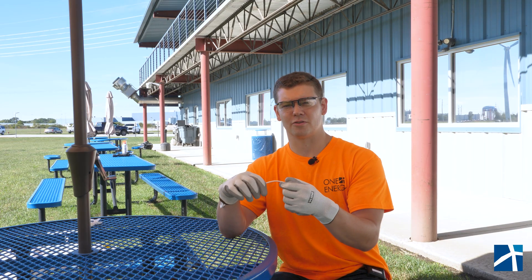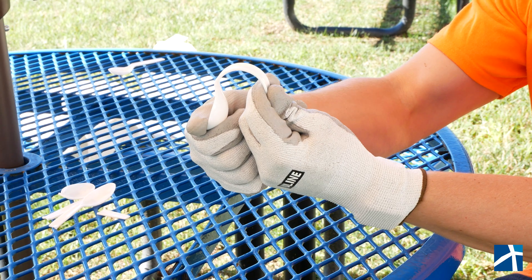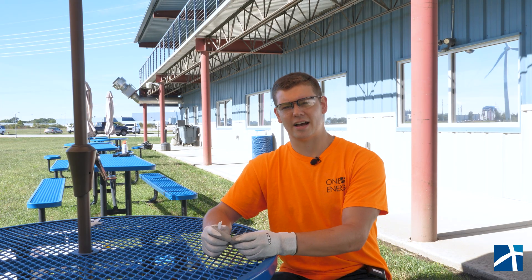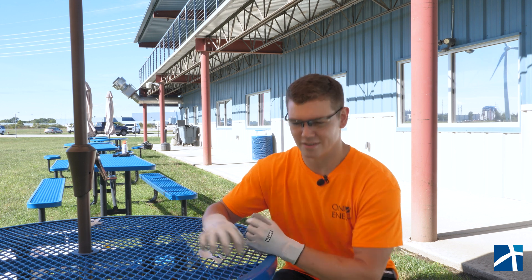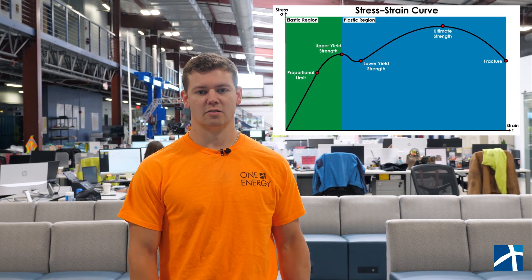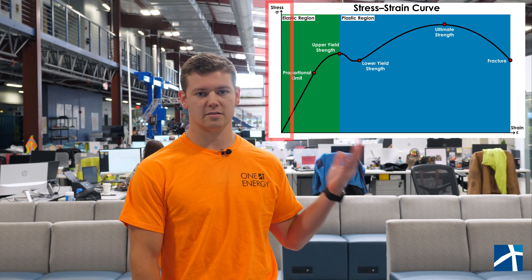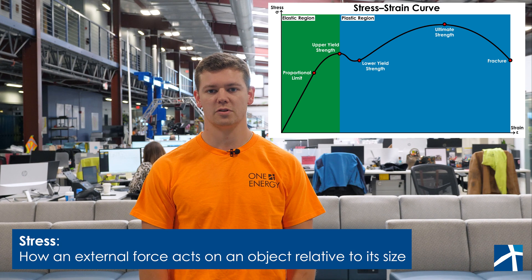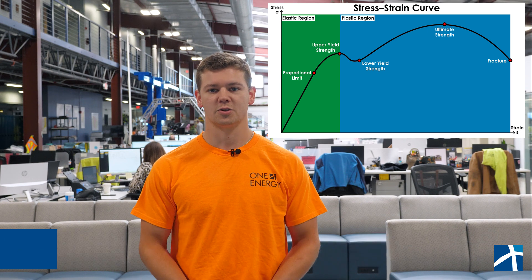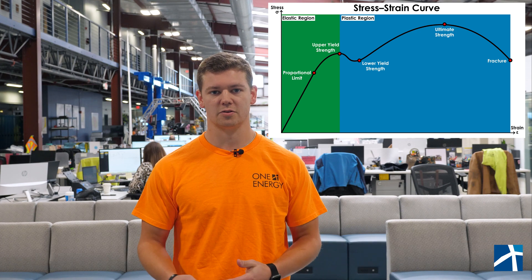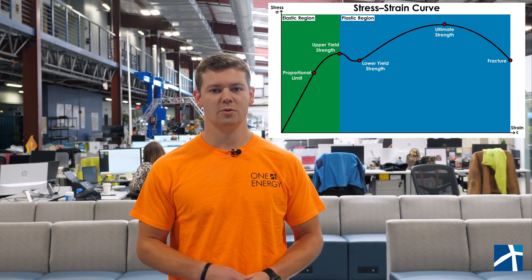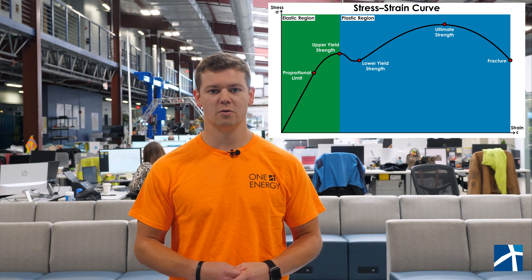If you continue to bend something further and further in its plastic region, eventually it will fail. Now that we have a decent understanding of elastic and plastic deformation, we can slide into the graphs that will show how materials can deform: stress-strain curves. Since all materials can undergo both elastic and plastic deformation, it's important to understand and visualize their properties. That's where the stress-strain graph comes in. This graph compares stress on the y-axis to strain on the x-axis. Stress is the measure of how much force a material is experiencing relative to its size or area. Strain is how the shape of an object is altered, like being stretched, squished, or bent. More force means more stress, while more bending or stretching means more strain.